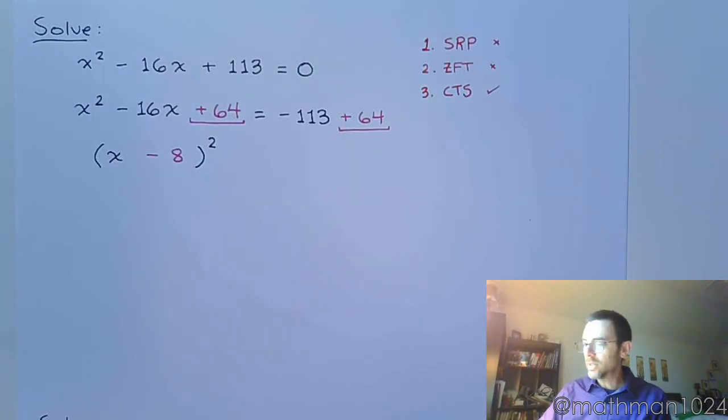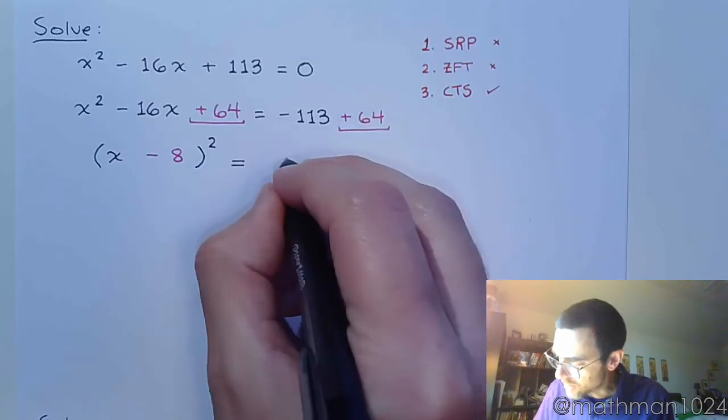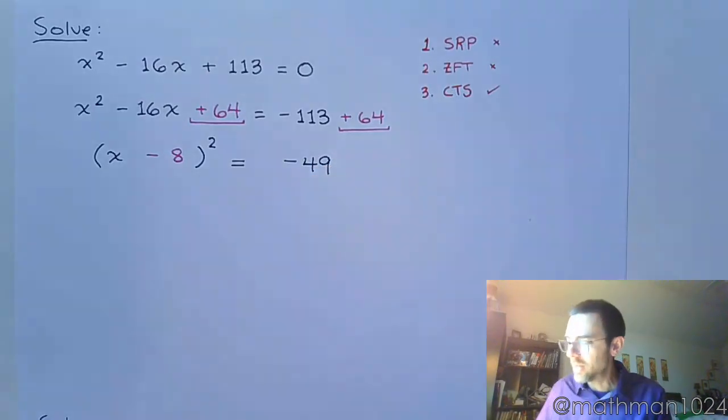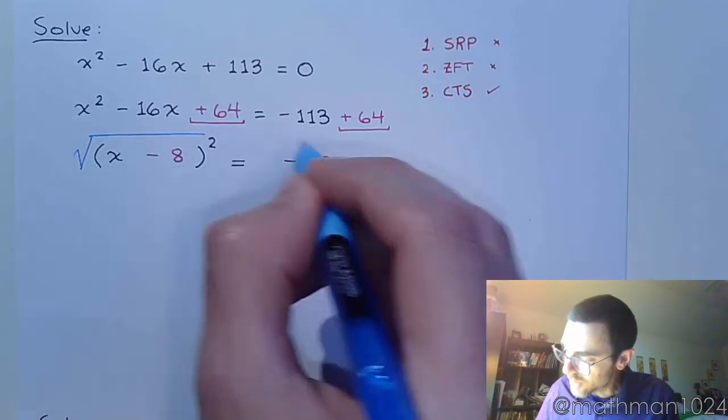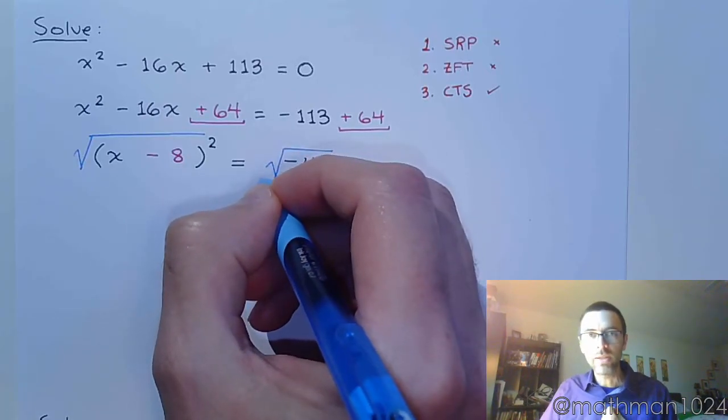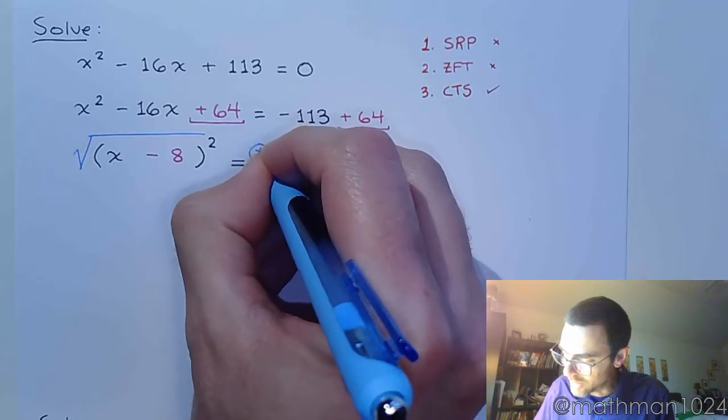All right, so let's clean this up. On the right side, when I do the subtraction, I get negative 49. All right, and now, we'll remember why we complete the square. We complete the square so that we can use the square root property. So, let's take the square root of both sides. Remember, when we take the square root of both sides, the plus or minus must come into play immediately.